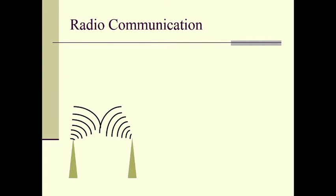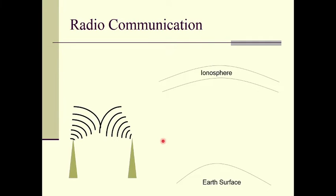Television communication, radio communication, and mobile communication all use radio waves. Radio waves transmitted from one tower will be received by another tower and retransmitted to other locations. On the earth's surface we have various network towers, and communication between towers can be done through the ionosphere layer of the atmosphere.